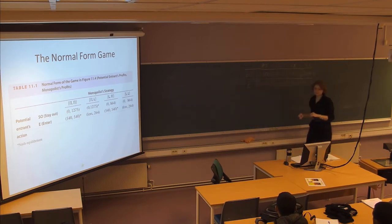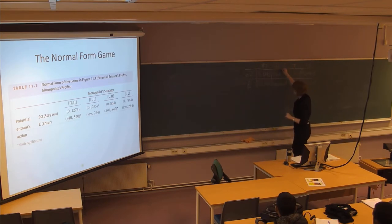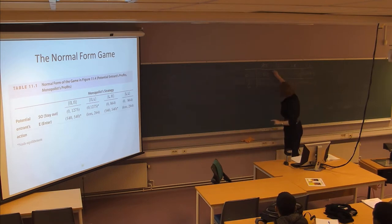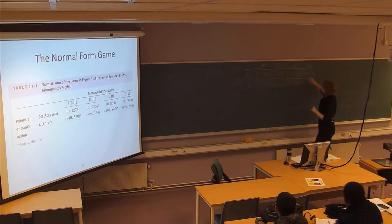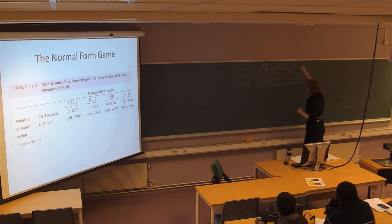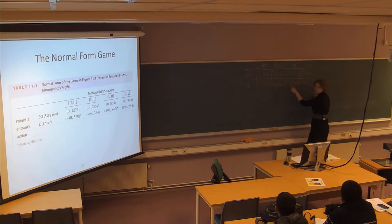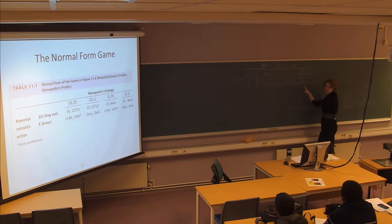If player two plays profit-profit, then I choose between zero and 540 — 540 is better, I put a star there. If player two plays his second strategy, player one decides between zero and a loss — zero is better, that is the best response. If player two plays his third strategy, player one decides between zero and 540 again — 540 is the best response. In this case, what is the best response? To stay out.